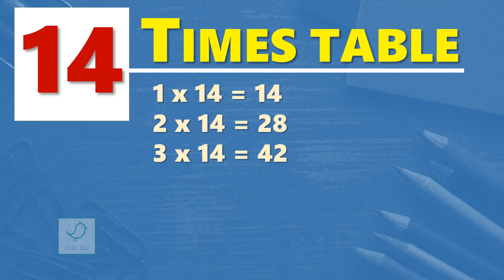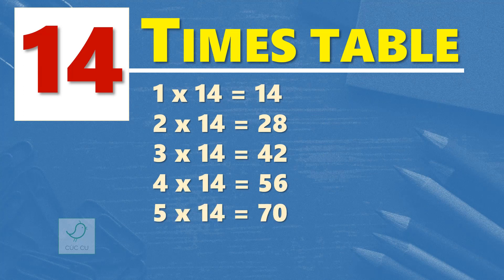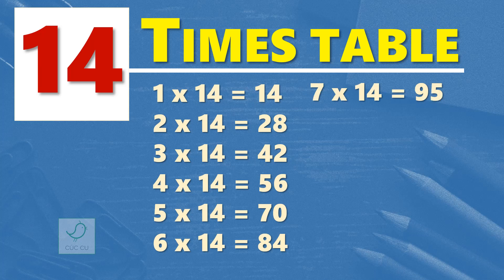3 times 14 are 42, 4 times 14 are 56, 5 times 14 are 70, 6 times 14 are 84, 7 times 14 are 98.